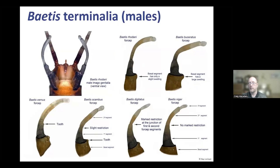In the hindwing venation of Baetis, most species have three simple veins. Some have the second vein forked — in Baetis atrebatinus the middle vein is forked while the top and bottom are simple. Some species only have two veins and those always have the fork. These features combined with the forceps shapes of the male genitalia can help separate species, though there is some variability. All these features are in the FBA key.